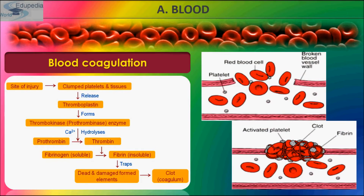When a blood vessel ruptures at the site of injury, smooth muscles in the vessel walls contract and cause the vessels to constrict. Platelets and injured tissue release thromboplastin, which initiates the formation of the enzyme prothrombinase. This enzyme, along with Ca2+, converts the inactive plasma protein prothrombin into the active form thrombin. Thrombin then catalyzes the conversion of soluble fibrinogen into insoluble fibrin. Fibrin fibers mesh and entangle platelets, blood cells, and plasma to form the clot. The entire process of clot formation requires around 2 to 8 minutes.